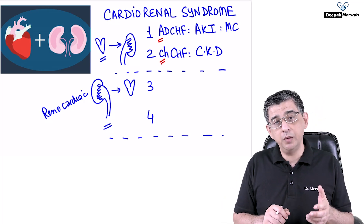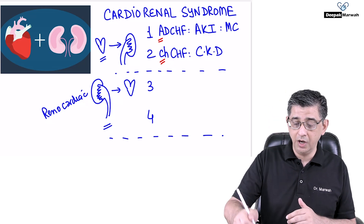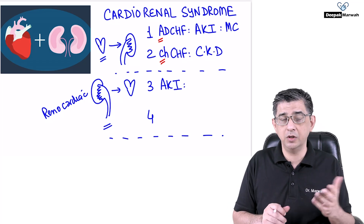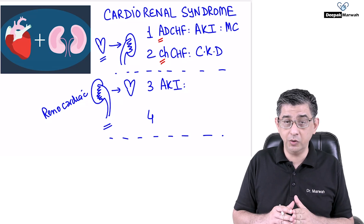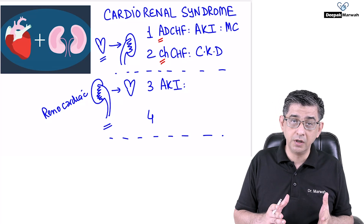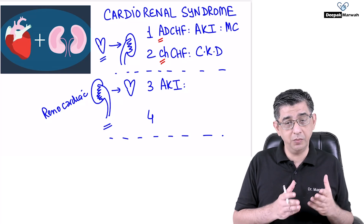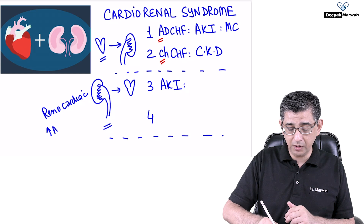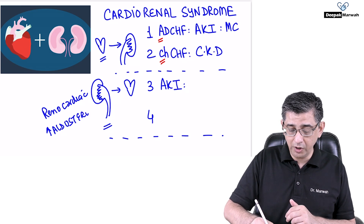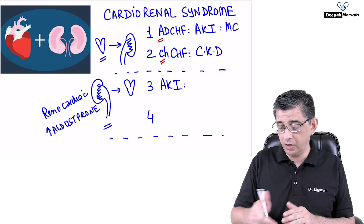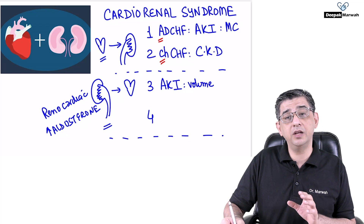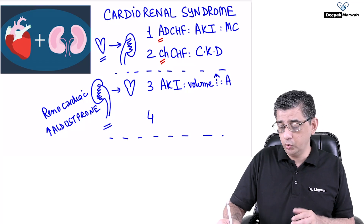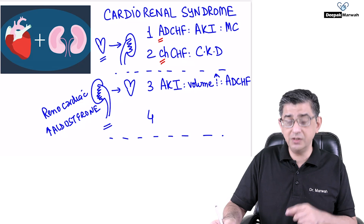For Type 3 and Type 4, I'll again divide these into acute and chronic versions. In Type 3, suppose a patient has acute kidney injury due to volume depletion — say a soldier had substantial blood loss after a blast, causing renal shutdown because of poor kidney perfusion. Once the kidneys shut down, aldosterone spikes, causing salt and water retention and volume overloading, which can cause acute decompensated congestive heart failure. You can see it is the reverse happening.